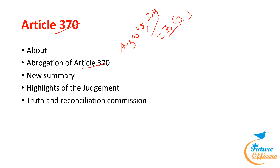Following the revocation of Article 370, numerous petitions were submitted. On August 28, 2019, the Supreme Court decided to consider several petitions contesting the repeal of Article 370 and the division of Jammu and Kashmir into two union territories. For the same, a five-judge bench was formed. The Supreme Court decided upon the union government's 2019 attempt to amend Article 370, and the court upheld the constitutional order that revoked Article 370 as valid.